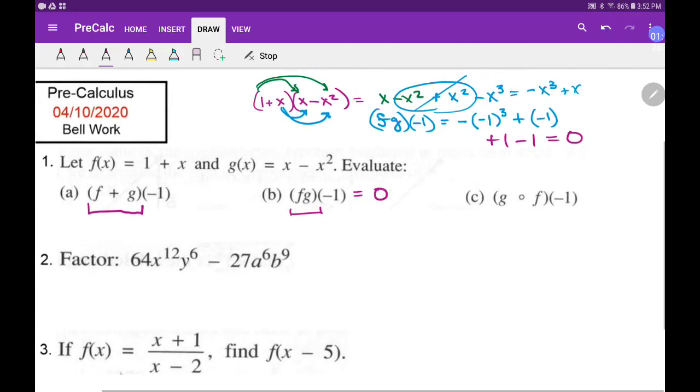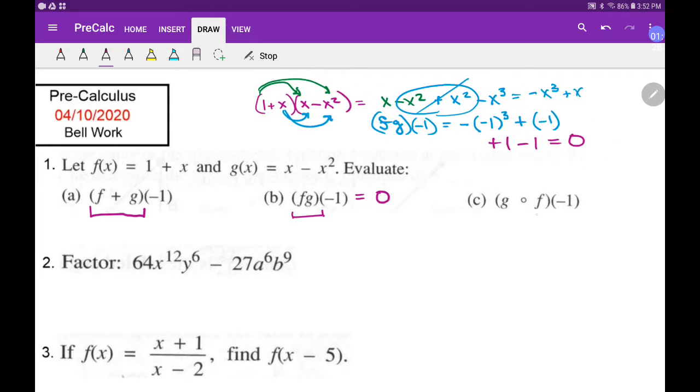You remember the composite. The composite says, do the one that's closest to the number first. So, we're going to do f of x. So I plug in minus one to f, and I get one and minus one, which is zero. And I take the results, and I plug them into g. And I go ahead and get my answer.